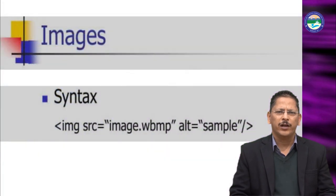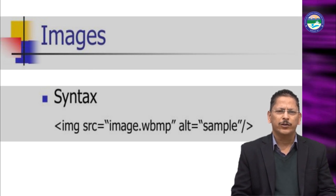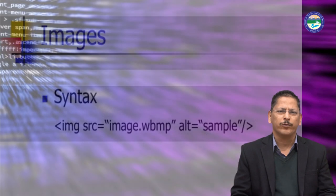We can also display an image on the mobile screen. The syntax is 'img src image.wbmp'. The WBMP extension is the image type supported by mobile phones. Depending on what image format the mobile supports, we write accordingly. This is the syntax for showing an image on a mobile phone.